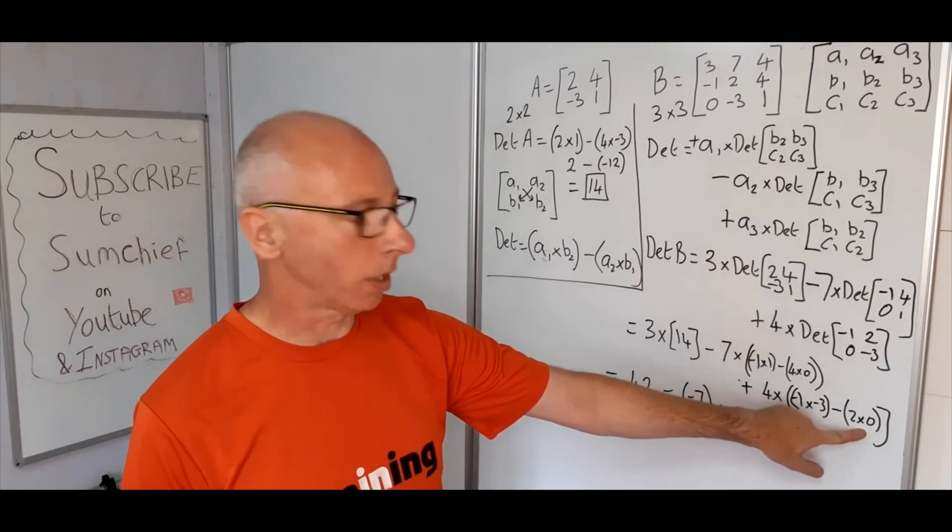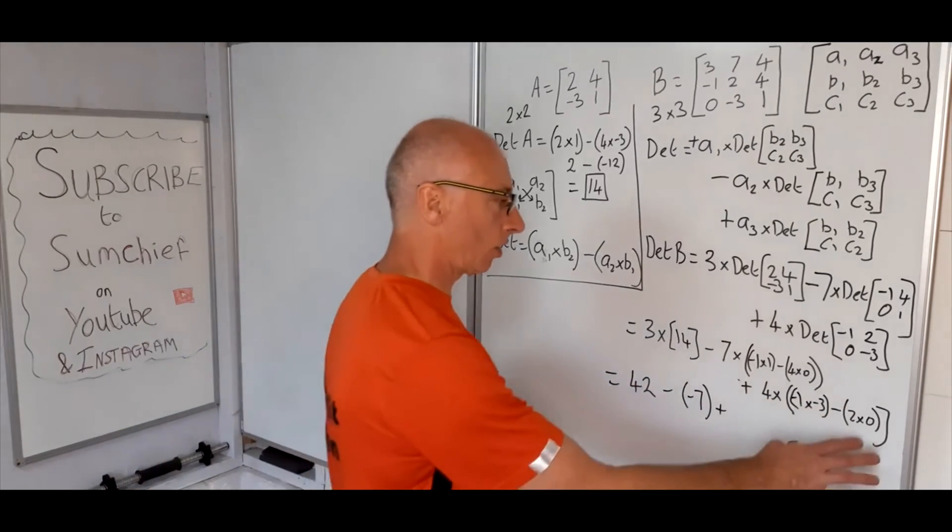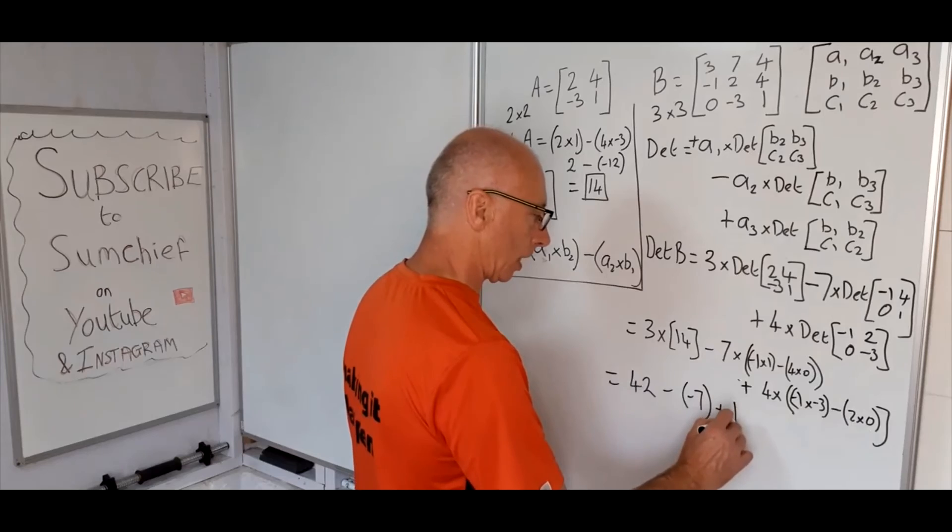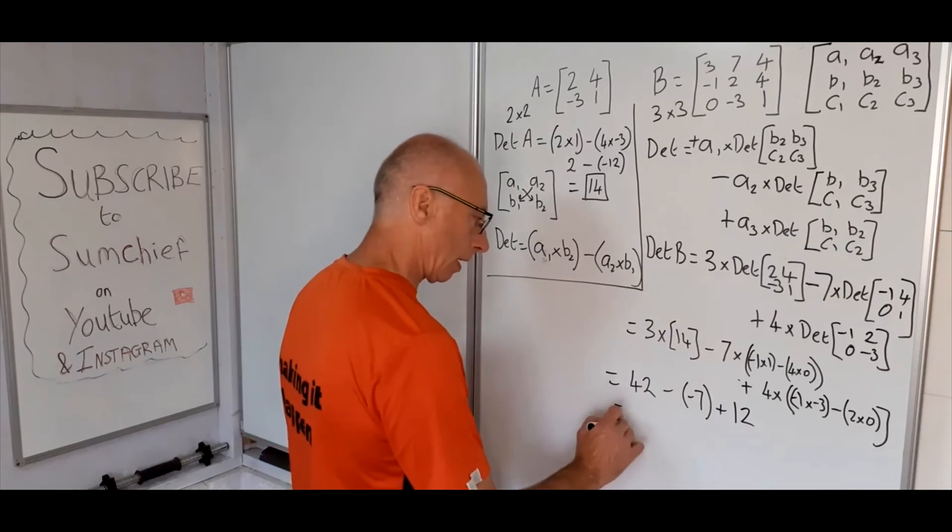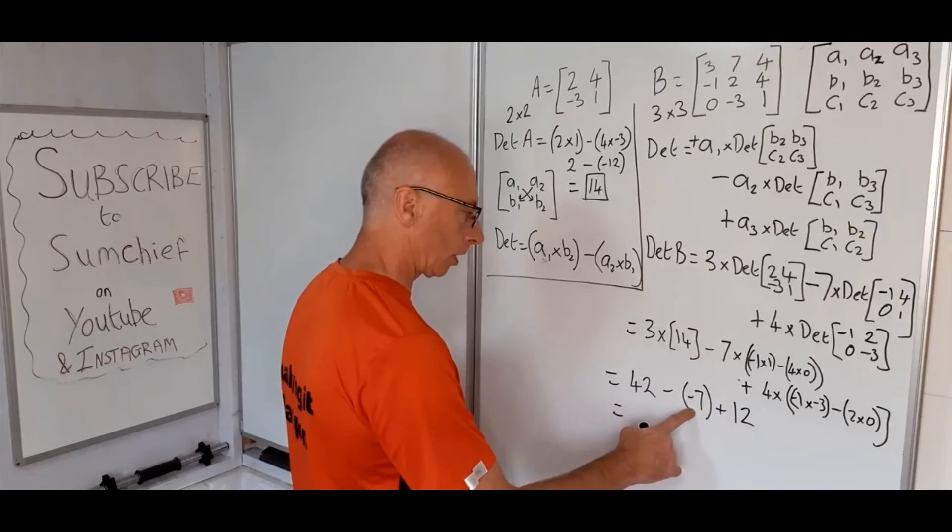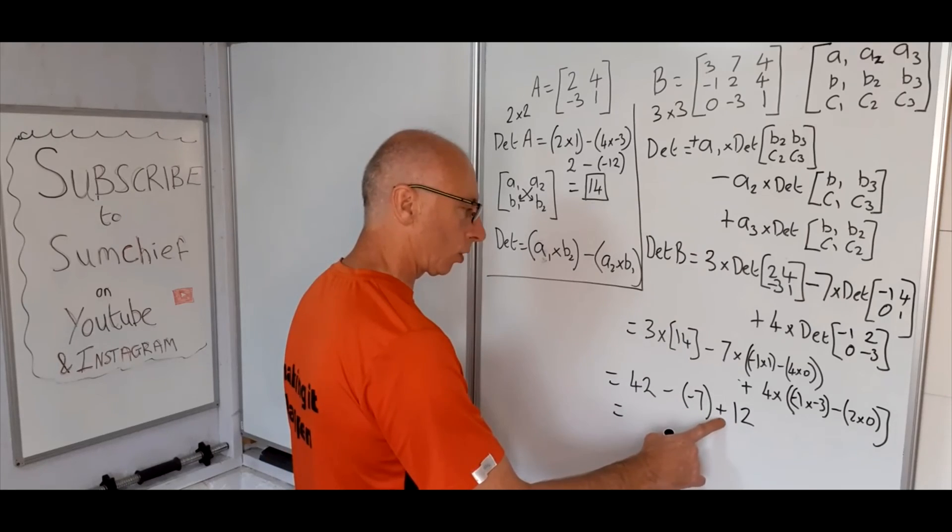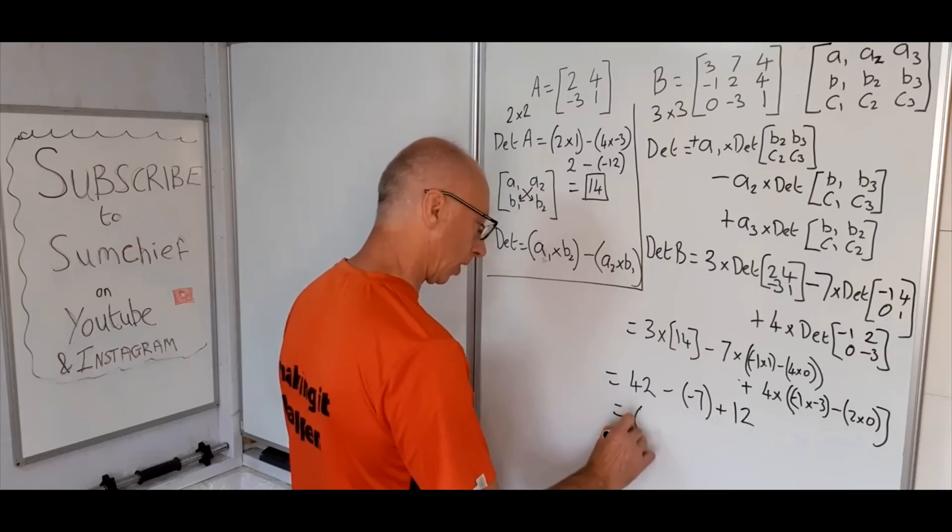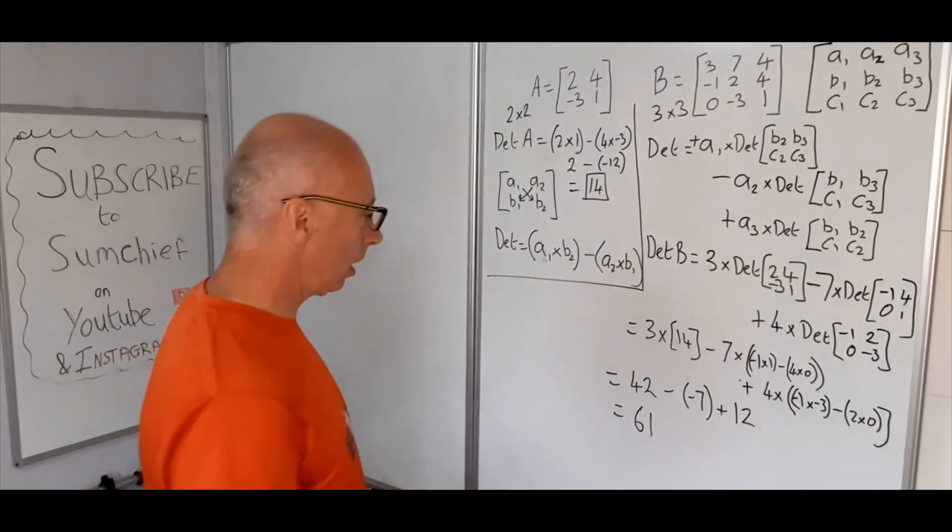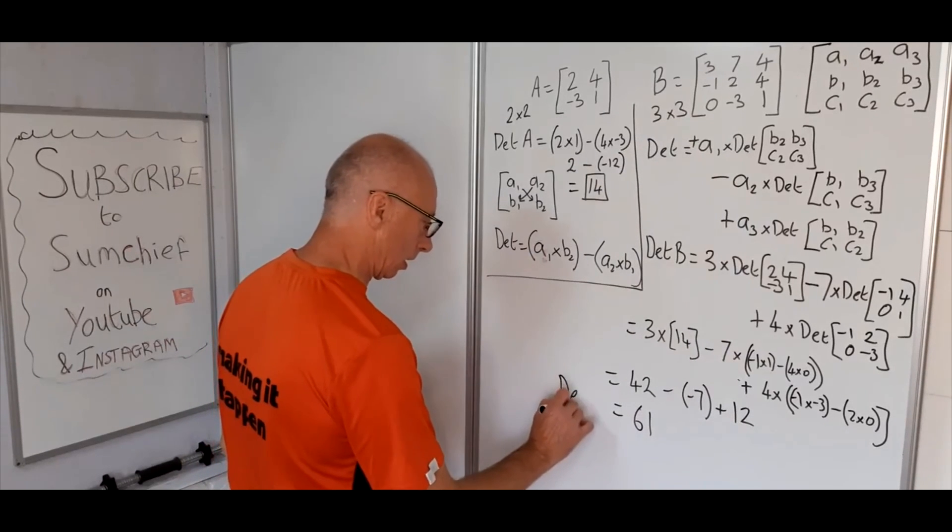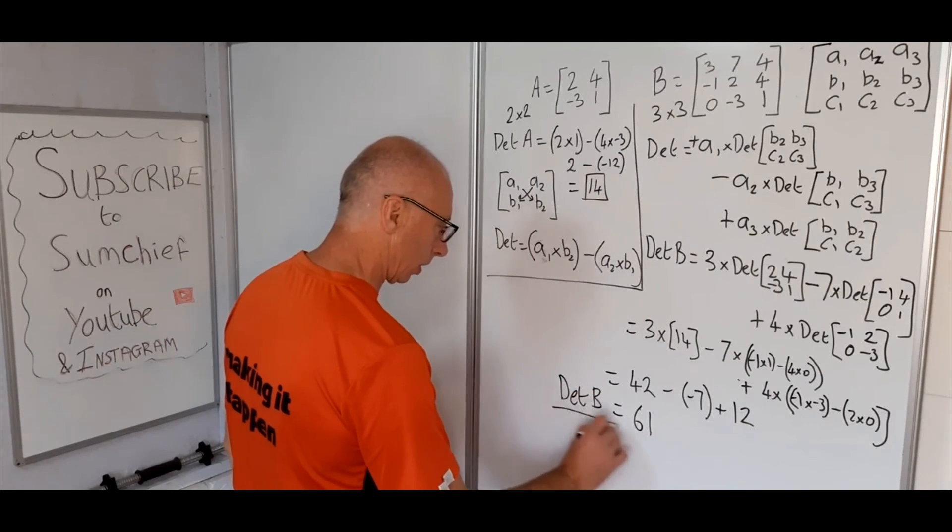Okay, minus 1 times minus 3 is positive 3. Times 4 is 12. Obviously this 2 times 0 we don't need. That's just gone. That's just 0. So 4 times 3, that's 12. So all we're going to do now is add these up. 42 minus minus 7 gives us 49. Plus 12 gives us 61. Okay, so what we can say is the determinant of B equals 61.